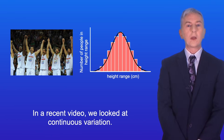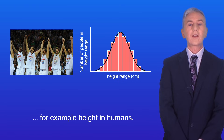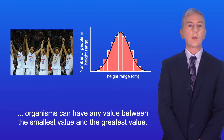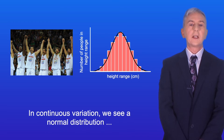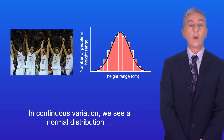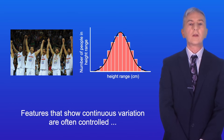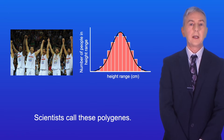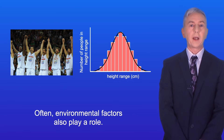In a recent video we looked at continuous variation. Many features show continuous variation, for example height in humans. For a feature showing continuous variation, organisms can have any value between the smallest and greatest value. In continuous variation we see a normal distribution. Features that show continuous variation are often controlled by a number of genes acting together, and scientists call these polygenes. Often environmental factors also play a role.